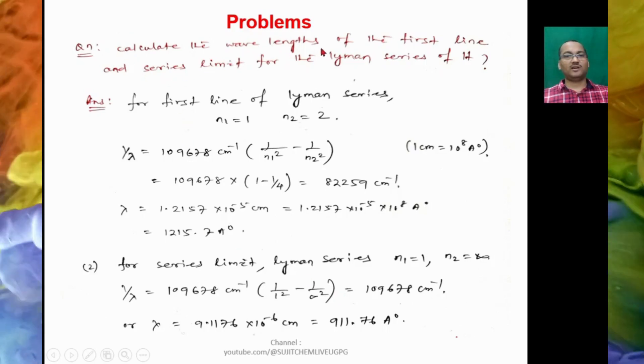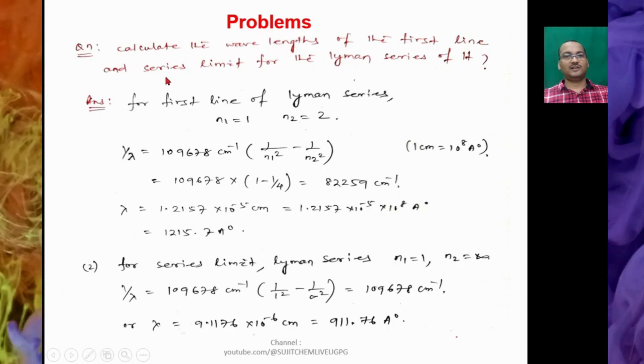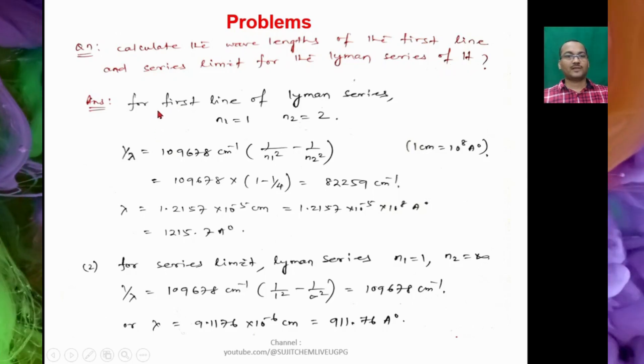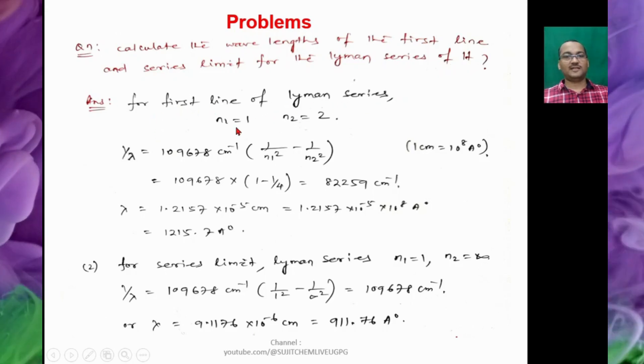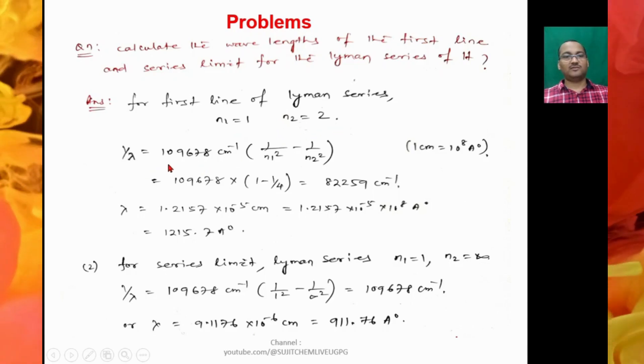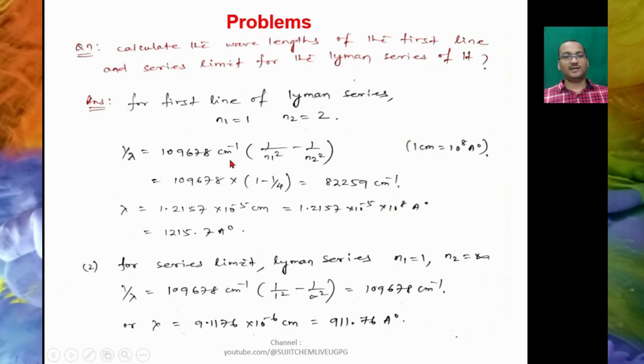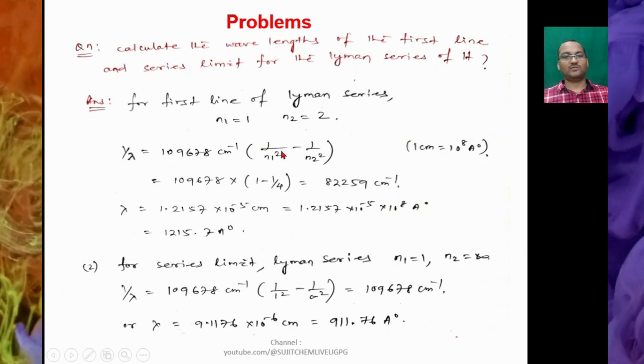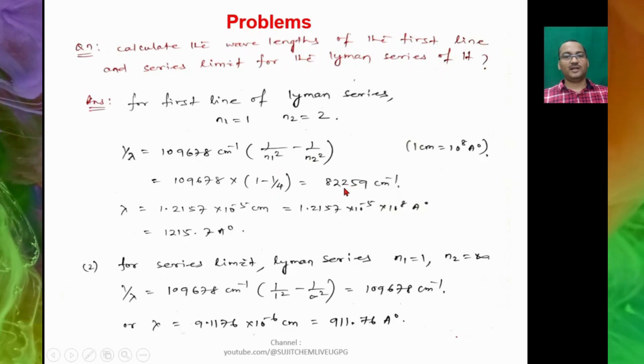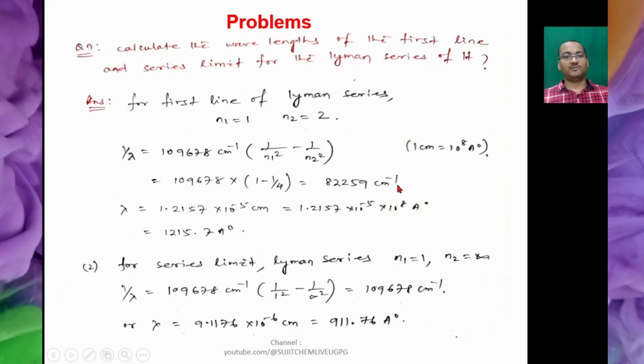Similarly, another problem: calculate the wavelengths in the first line and series limit for Lyman series of hydrogen atom. So for first line of Lyman series, N₁ = 1, N₂ = 2. So 1/λ = 109678 cm⁻¹ × (1/N₁² - 1/N₂²). So it is found to be 82259 cm⁻¹.